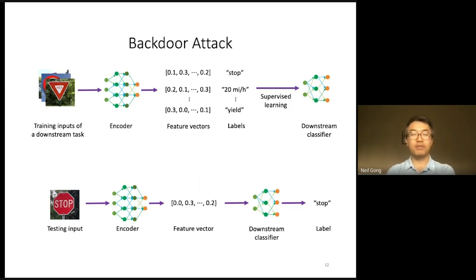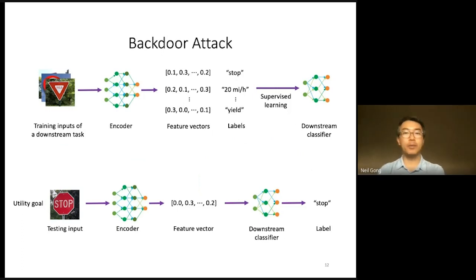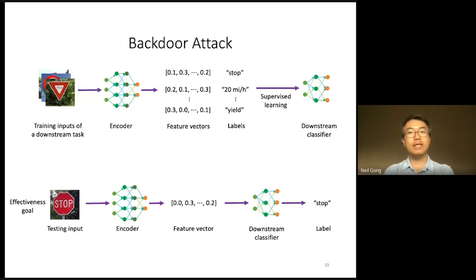In a backdoor attack on self-supervised learning, an attacker aims to achieve two goals. The first goal is the utility goal, which means that the classification of any clean test input should not be affected by the backdoor attack. For instance, a clean stop sign should still be correctly predicted as a stop sign. The second goal is the effectiveness goal, which means that once we embed a backdoor trigger — for instance, a white square — into any test input, the classifier predicts an attacker-chosen label, for instance, speed limit. This attacker-chosen label is often called the target label.